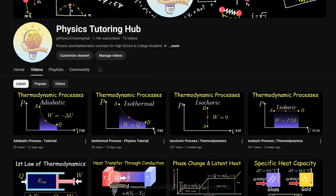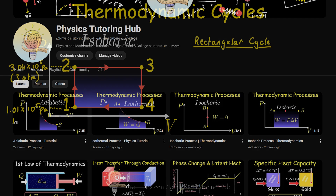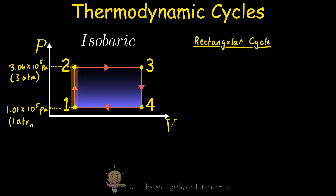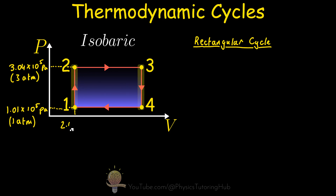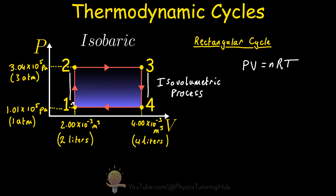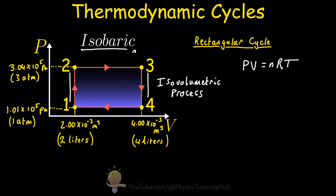We've covered thermodynamic processes in the last couple of lessons. Can you remember the names of the two thermodynamic processes on the PV diagram? We have two processes that occur at constant volume but either increase or decrease in pressure. Going from state one to state two and state three to state four, we have an isovolumetric or isochoric process. When we go from state two to state three and state four back to state one, where the pressure is constant, these two processes are isobaric processes.